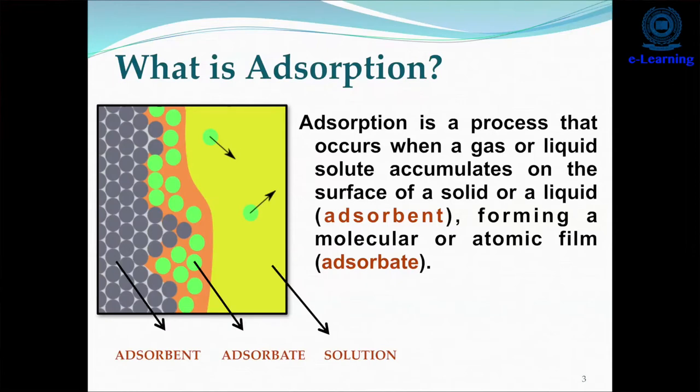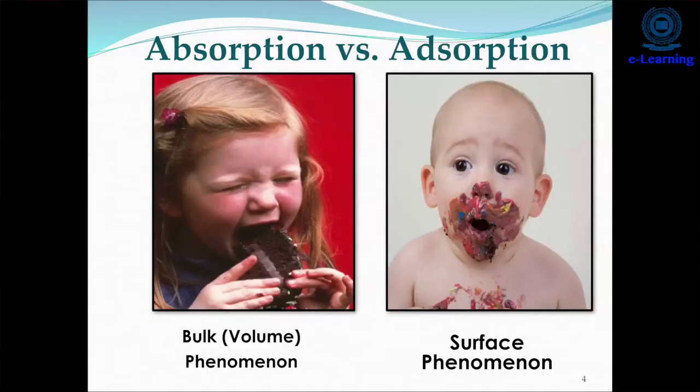What is adsorption? Adsorption is a process that occurs when a gas or liquid solute accumulates on the surface of a solid or liquid, forming a molecular layer on that surface.